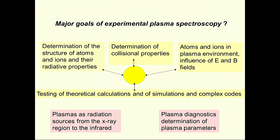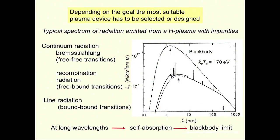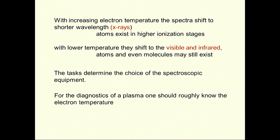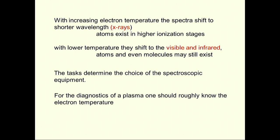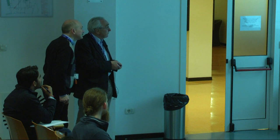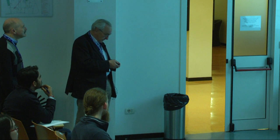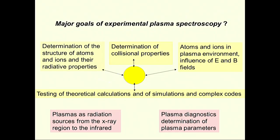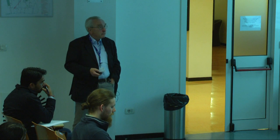When you do plasma spectroscopy, you have to think about the goals. One goal could be you want to study radiative properties, or you do spectroscopy because you want to study collisional properties. You can also study atoms in a plasma environment — the influence on atomic structure by electric and magnetic fields — and you want to test theoretical calculations and modeling, which we will hear a lot about this week.